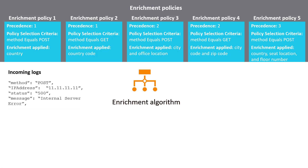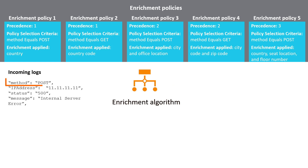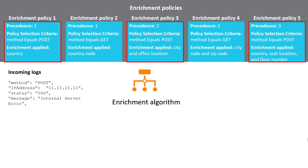First, the enrichment algorithm filters enrichment policies based on the conditions satisfied in the logs. In our example, the condition satisfied in the logs is method equals POST. Therefore, the algorithm filters policies where the selection criteria is method equals POST. Here are the filtered policies: enrichment policy 1, 3, and 5.